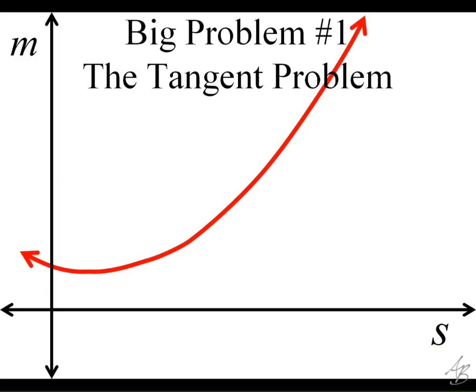And so we used a limit where the two points are getting infinitesimally close to each other. So the numbers are getting really close to each other, and we were able to do that to find the slope of the tangent line to the curve.